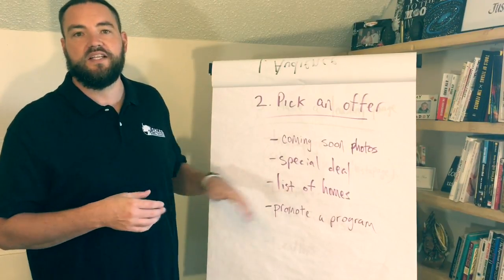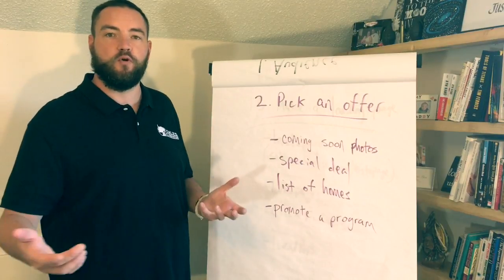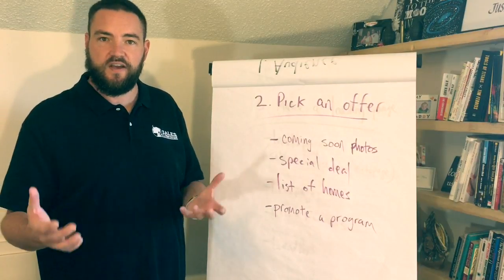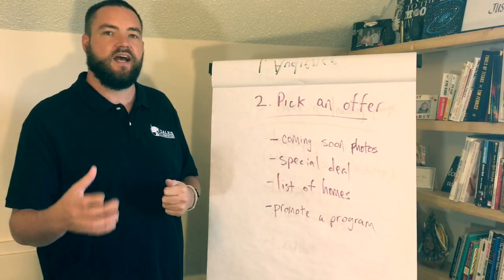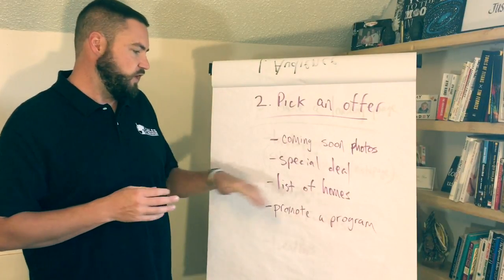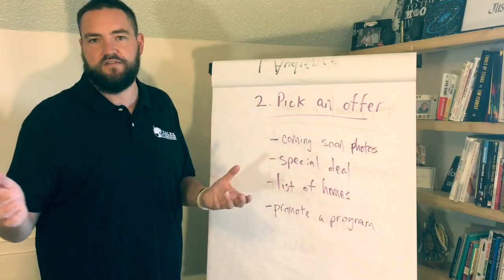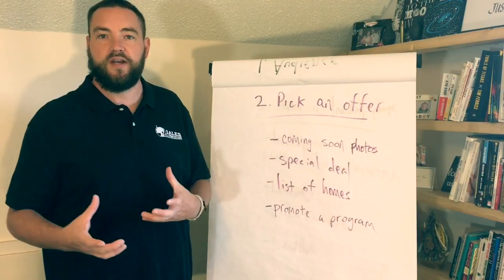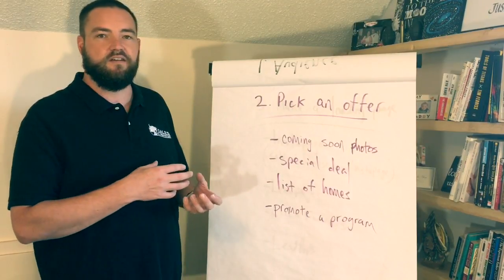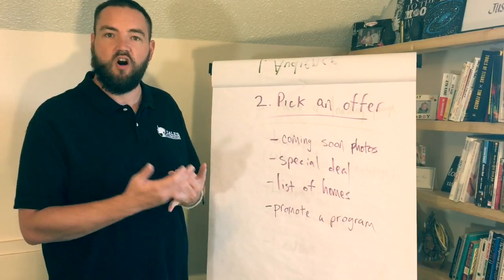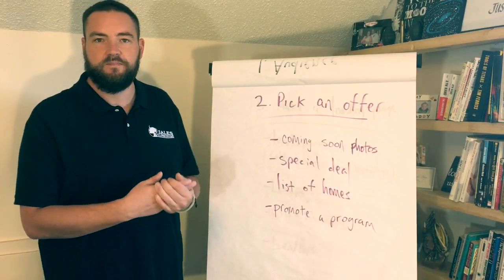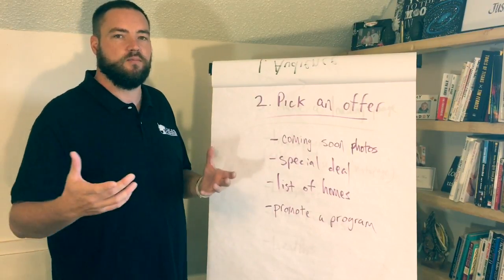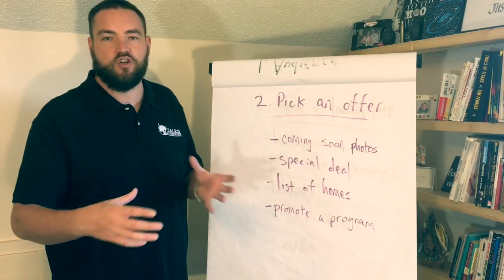You can also create a list of homes or promote a specific program like the VA program or USDA if it's available in your area. People love getting into houses for zero down payment. You can create lists based on great deals, specific price ranges, or specific features — horse properties, golf properties, condos, bachelor pads. There's a lot of different lists you can create.